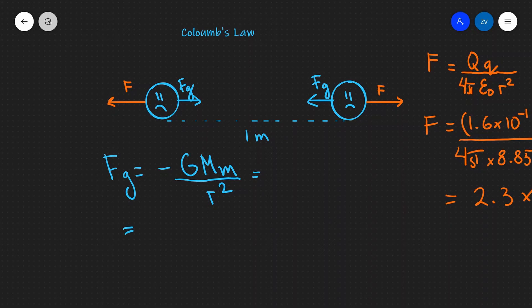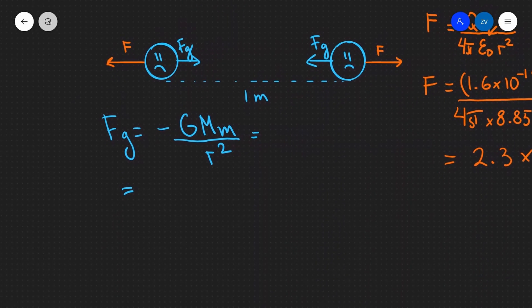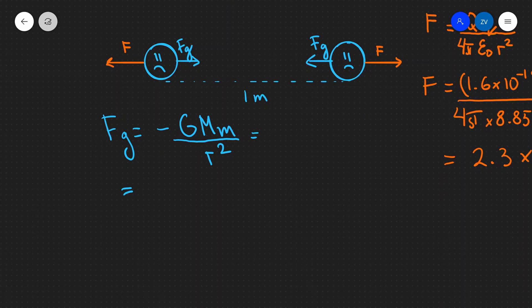So let's do exactly the same calculation for the gravitational force, and we remember that the value of the gravitational constant G is 6.67 multiplied by 10 to the power of minus 11.